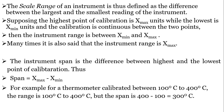Span is the algebraic difference between the highest and the lowest point of calibration — that is, x-maximum minus x-minimum. For example, for a thermometer calibrated between 100°C and 400°C, the range is 100°C to 400°C, but the span is 400 minus 100, which is 300°C. If the range is −100°C to 400°C, the span is 400 minus (−100), giving 500°C.